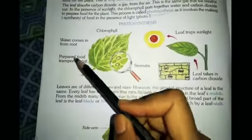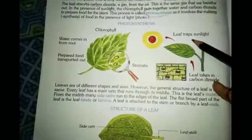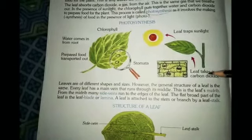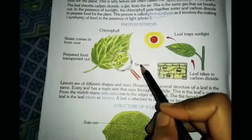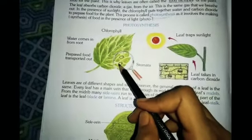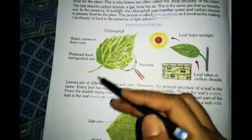With the presence of sunlight, carbon dioxide and water, the leaves can make food for the plant, and this process is called photosynthesis. Water comes in from the root. Leaves trap sunlight. Leaves take in carbon dioxide with the help of stomata — stomata are small openings of the leaves. And the prepared food is transported out by the stem.